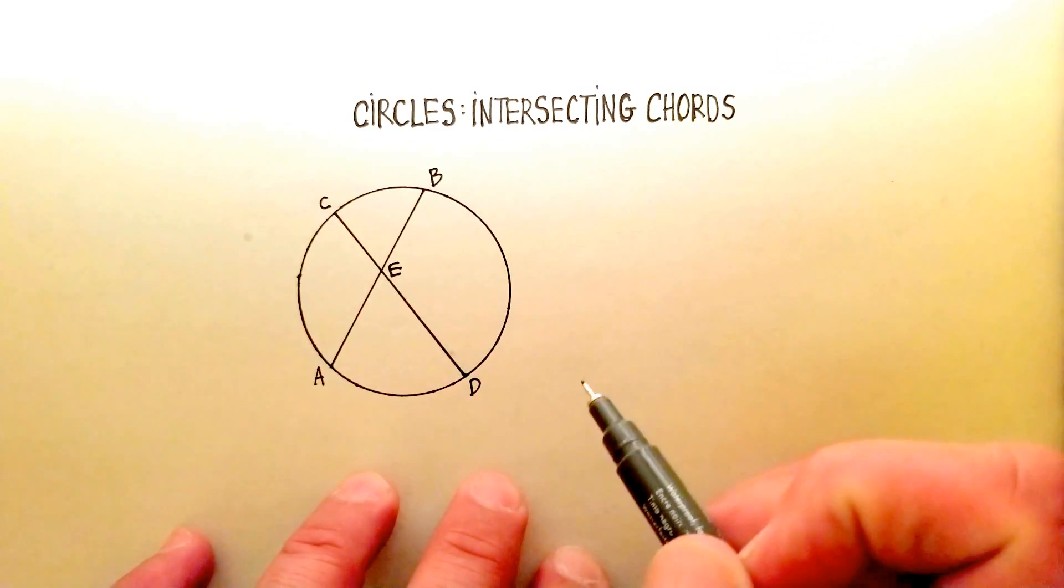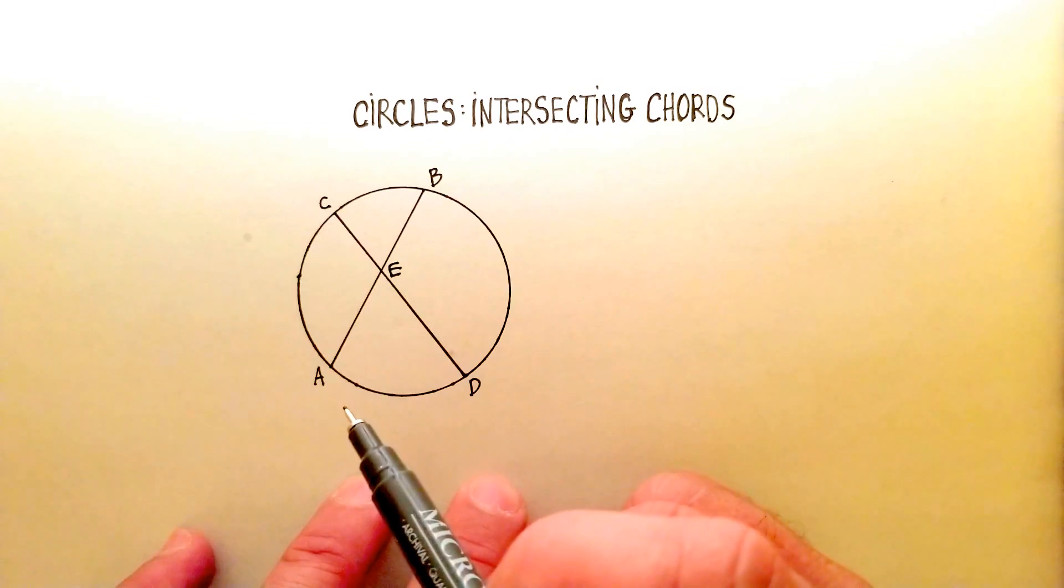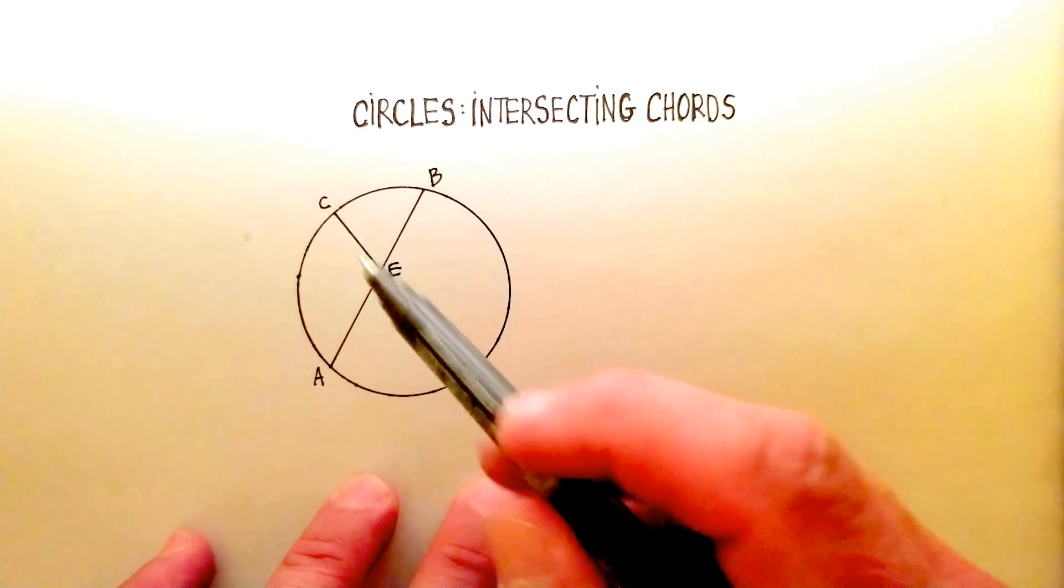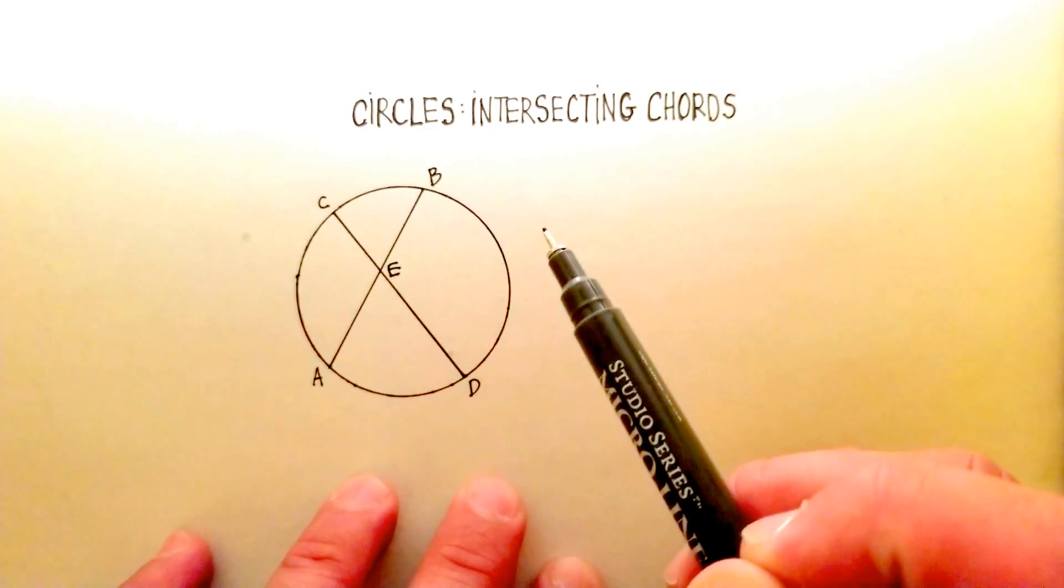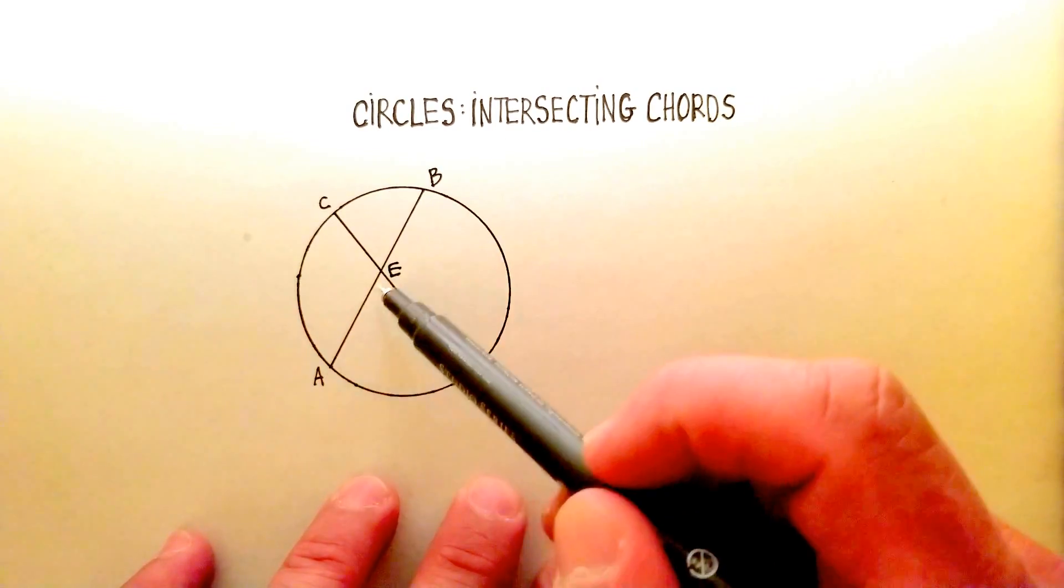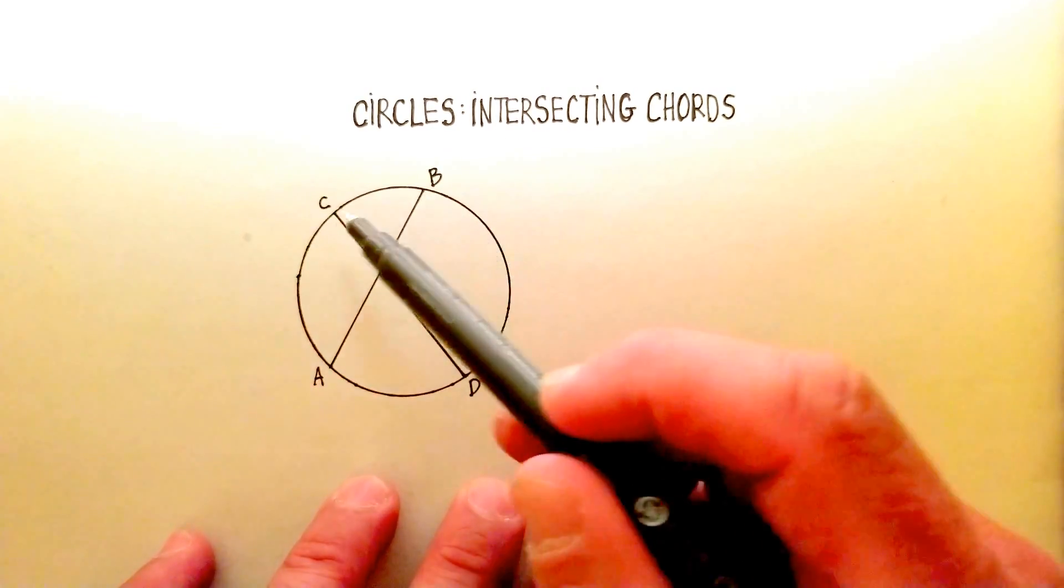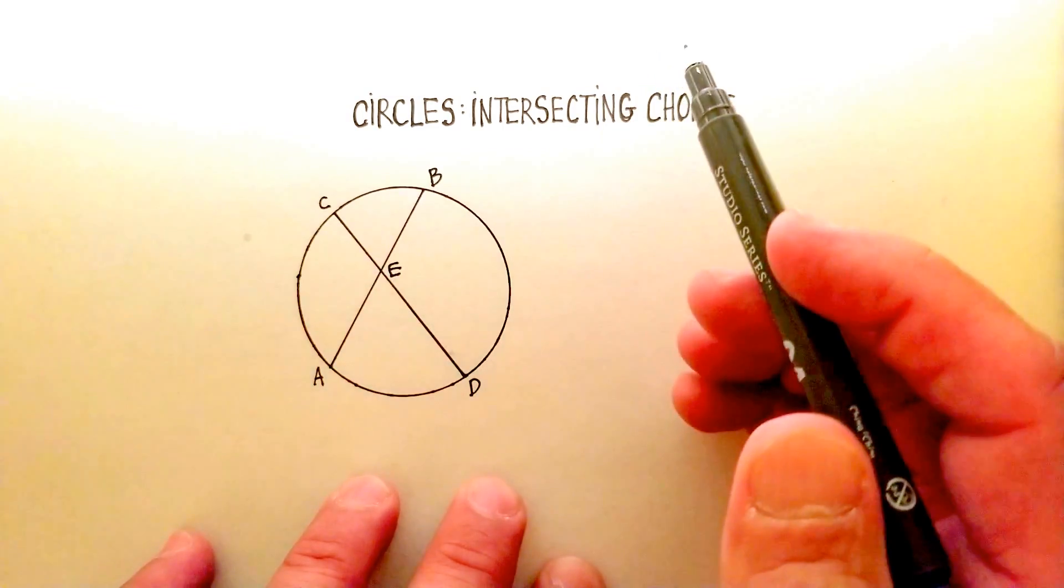Okay, in this video, we're going to examine the relationship that exists when you intersect two chords inside of a circle, and specifically, we're going to look at the chord or the line segments that make up that chord.